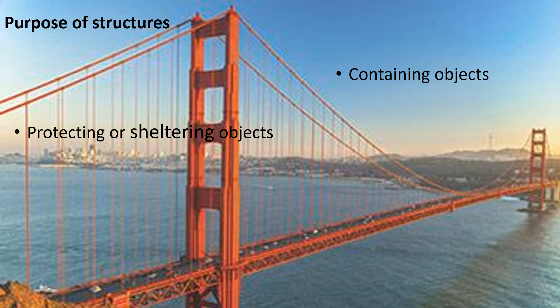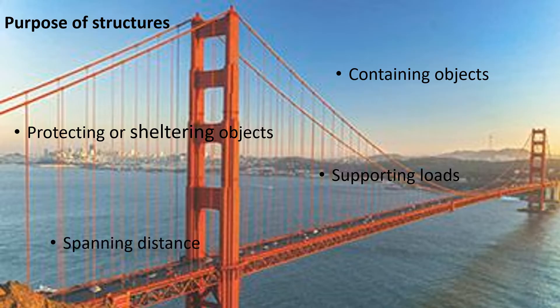A structure can support the weight of another object. For example, a chair that you sit on. The last function is spanning a distance. A structure can span a distance, like a spider's web spanning across two branches.